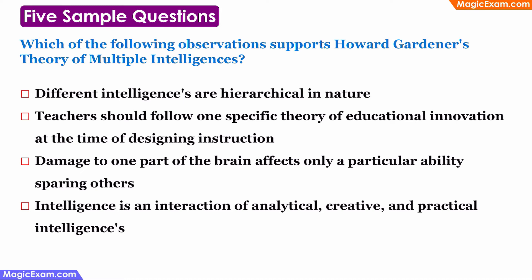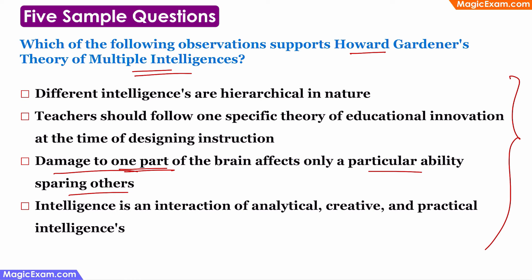Sample question: Which of the following observations supports Howard Gardner's theory of multiple intelligences? If you read through all the statements, you'll see that the third statement — which says that damage to one part of the brain affects only one particular ability, sparing the others — seems to support the theory of multiple intelligences. This is because if there are multiple intelligences and different parts of the brain are responsible for each type, then damage to any one part will affect only that type of intelligence and will not affect the others. Therefore, statement three supports the multiple intelligence theory.